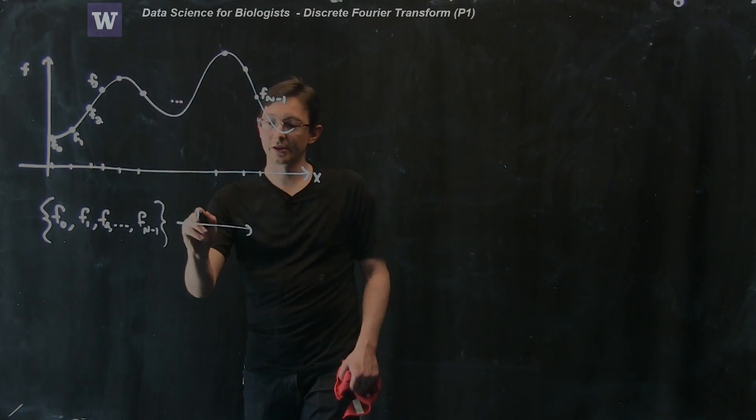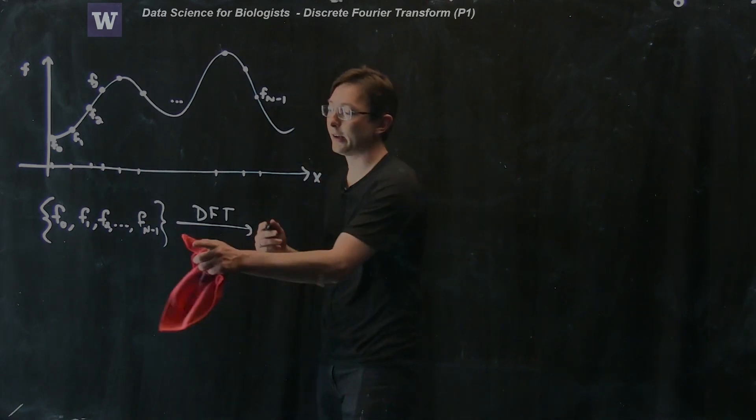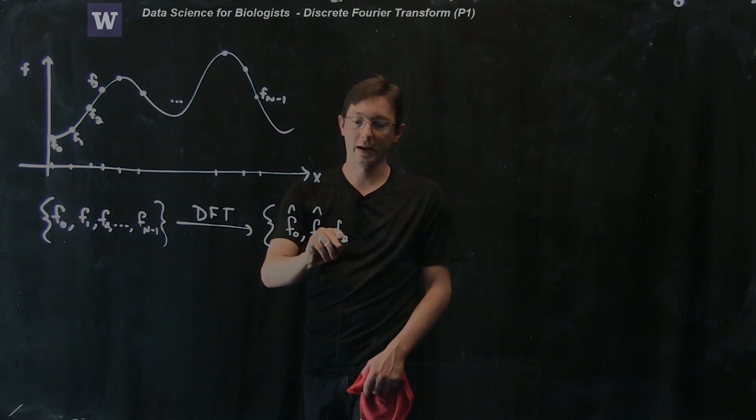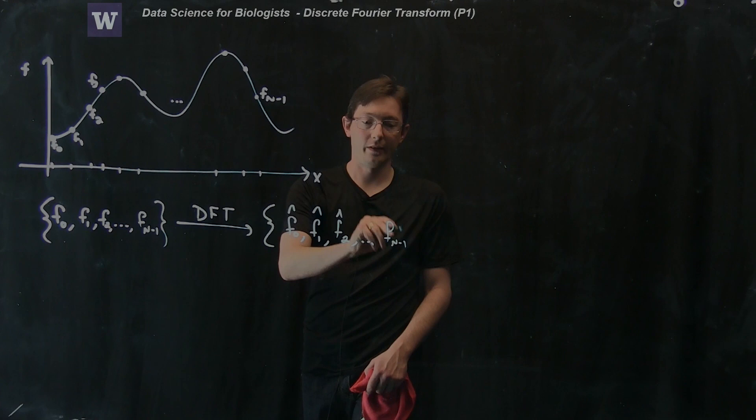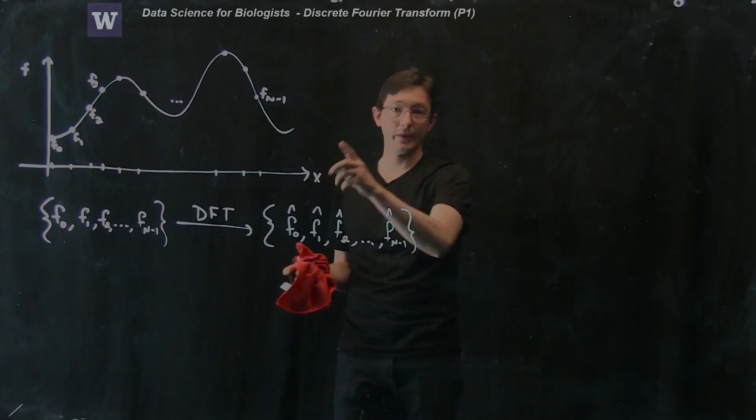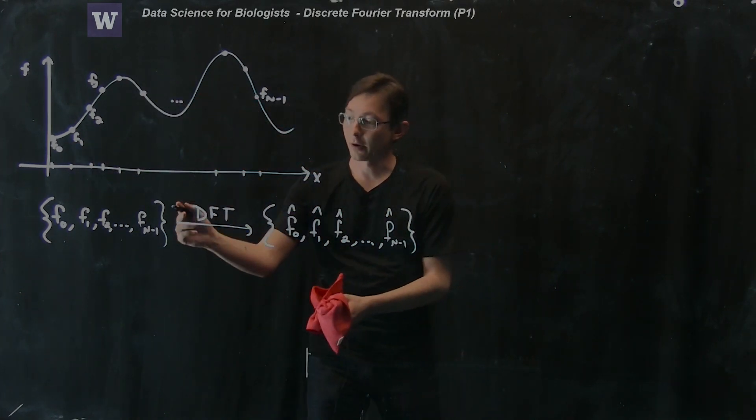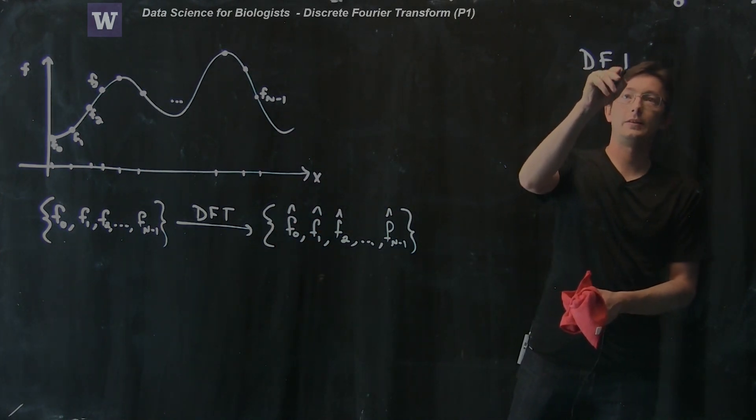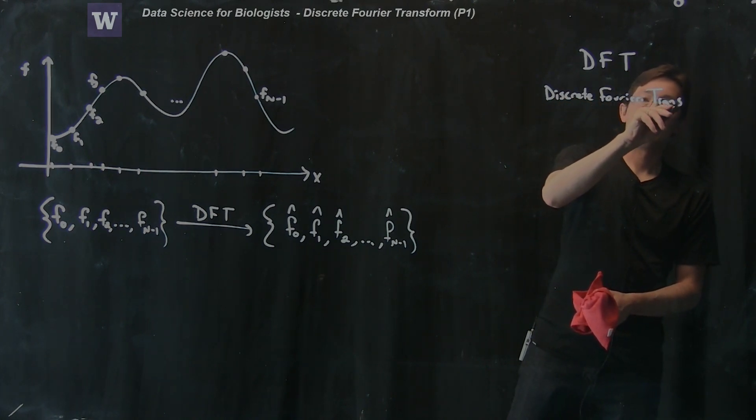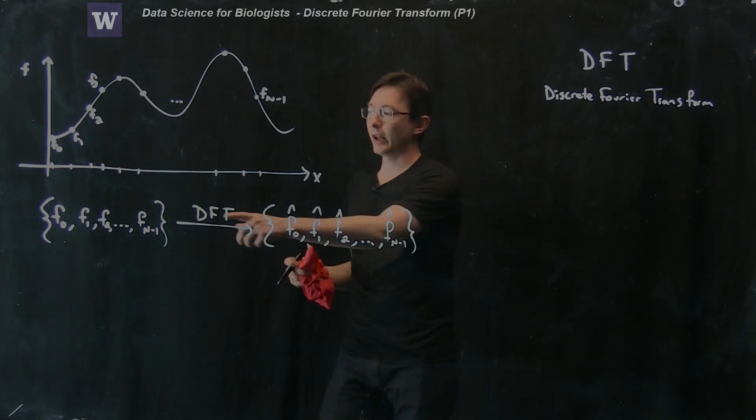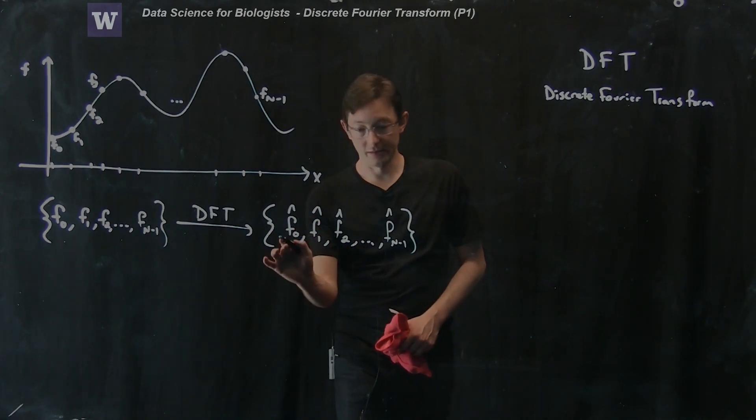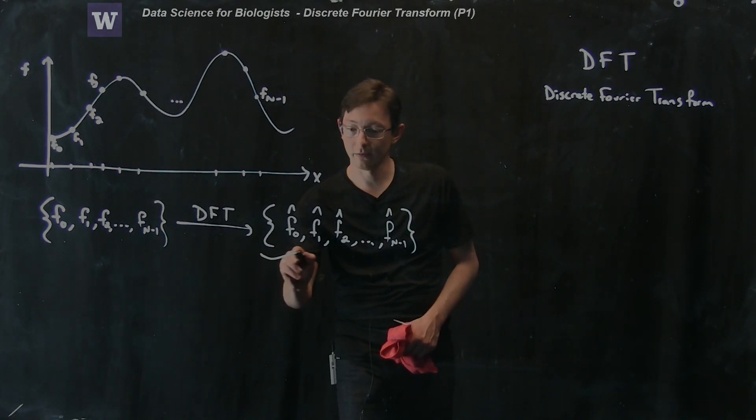And we're going to take this and run it through our discrete Fourier transform. And we're going to get another vector of numbers. We're going to get another vector of numbers, f0 hat, f1 hat, f2 hat, and so on and so forth, up to f n minus 1 hat. And so if I start with n numbers in my n samples of my function, and I run it through my discrete Fourier transform, what I'm going to get out is a bunch of coefficients, the same number, so I'll have n of these coefficients. These are called my Fourier coefficients.